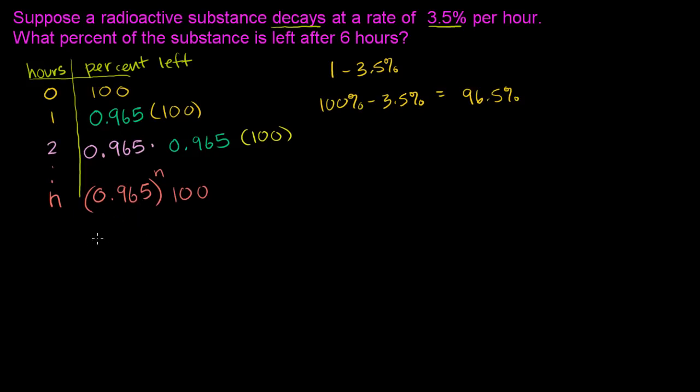And oftentimes, you'll see it written this way. You have your initial amount times your common ratio, 0.965 to the nth power. This is how much we're going to have left after n hours.